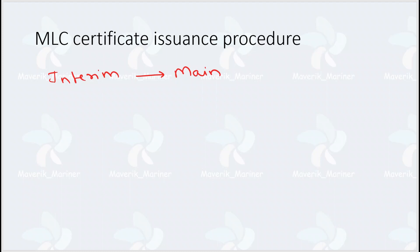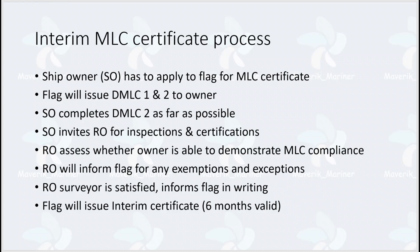How is the MLC certificate issued? Always remember — the main MLC certificate is not issued directly; the interim certificate is issued first. The ship owner applies to the flag for an MLC certificate. The flag issues DMLC Part 1 and DMLC Part 2 to the ship owner. DMLC Part 1 will have the flag requirements; the ship owner must fill in DMLC Part 2 — the owner's declaration of how they are following the clauses in Part 1 — as far as possible.